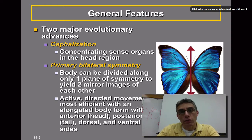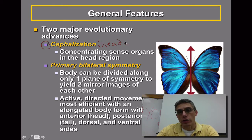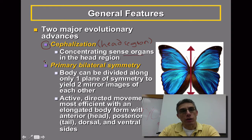The first evolutionary advantage is something called cephalization. When you talk about cephalization, you're basically talking about an animal that now has a very defined head region. Because these animals have a defined head region, we're now talking about an area of the body where you can concentrate various sense organs.